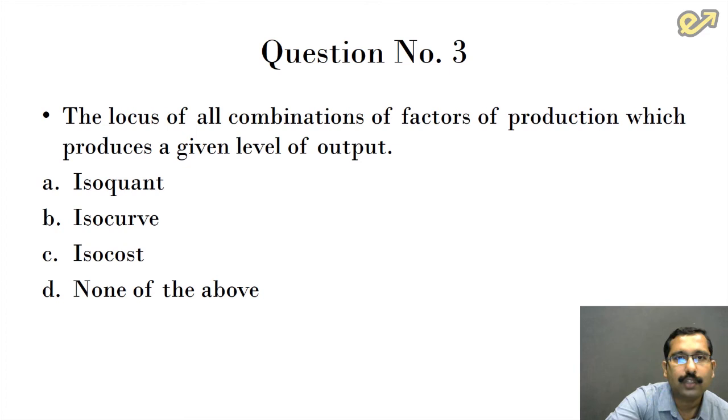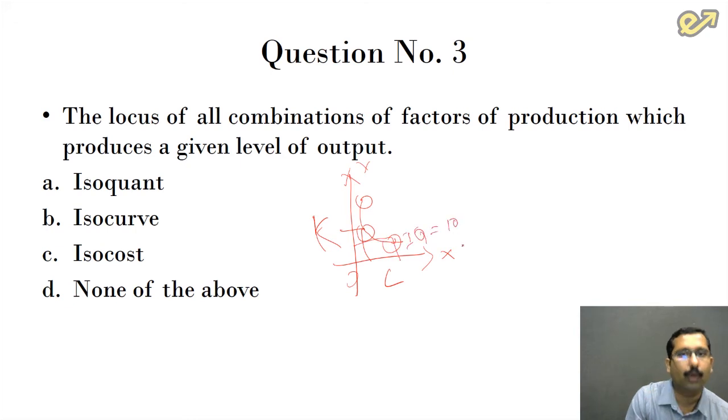The locus of all combinations of factors of production which produces a given level of output. There are different combinations of K and L that are possible on the x-axis and y-axis. Let us connect all these points. These are different locus points and all of them, although their combination is different, are giving the same level of output. So the locus which connects all combinations that give the same output is the iso-quant curve. The answer is option A.